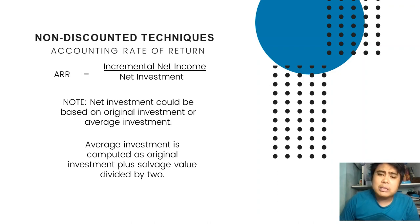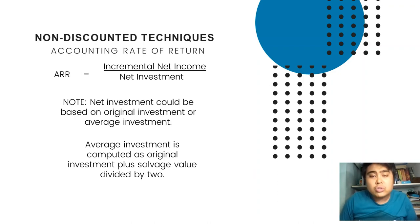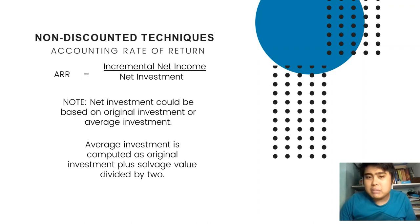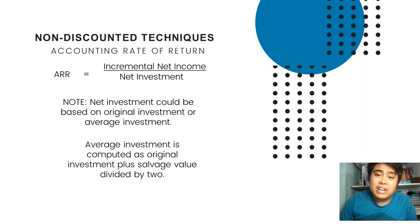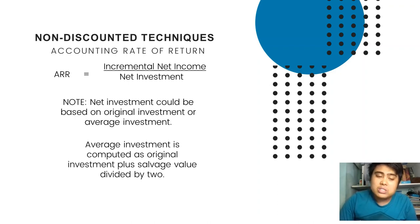Net income uses information all throughout the year, while net investment is not an average amount — you only release the money once at time zero. Since they are not comparable, as in financial statement analysis, we average the balance sheet account. The balance sheet account here is the net investment account, and the average computation is net investment plus salvage value divided by 2.